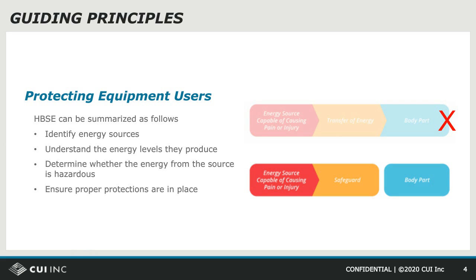Let us now look at some guiding principles of HSBE as it applies to IEC 62368. As it is a safety regulation, the overall purpose is to protect users from hazards associated with products. HSBE descriptive guidelines have basic steps to follow. First, identify energy sources associated with the product. Some examples would be products powered directly from AC wall power, or other products that have their input power from a wall adapter.